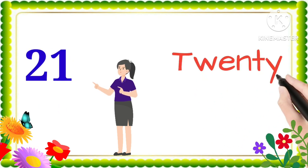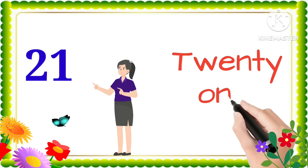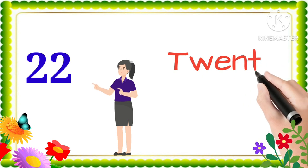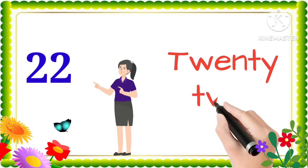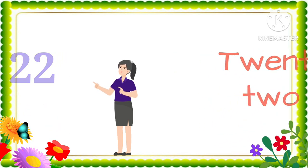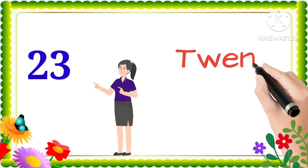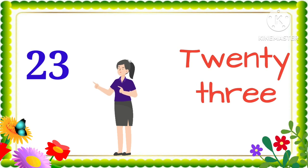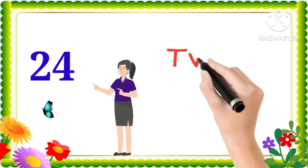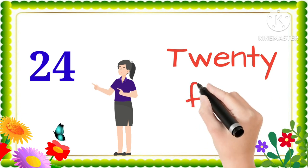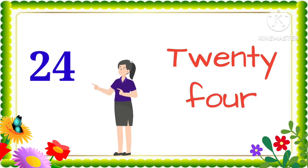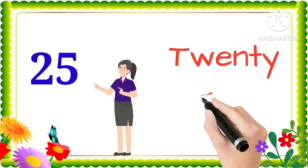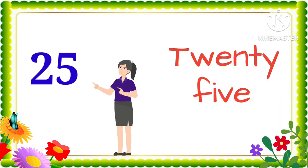21. T-W-E-N-T-Y-O-N-E. 22. T-W-E-N-T-Y-T-W-O. 23. T-W-E-N-T-Y-T-H-R-E-E. 24. T-W-E-N-T-Y-F-O-U-R. 25. T-W-E-N-T-Y-F-I-V-E.